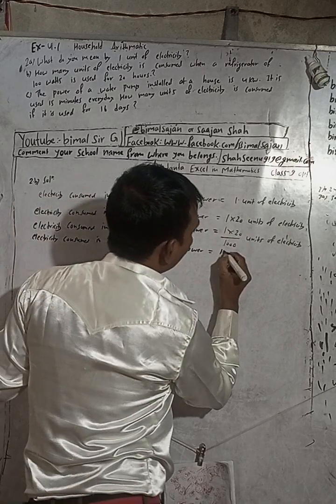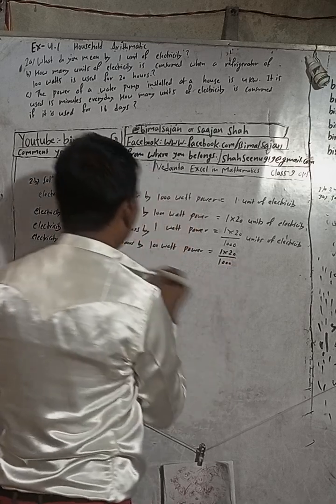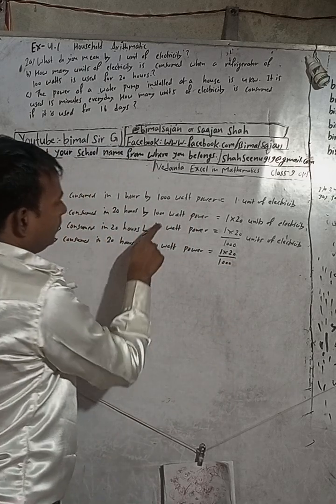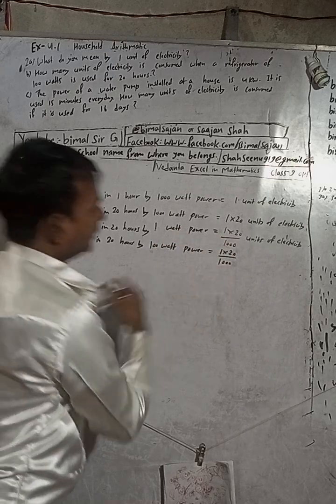1 into 20 divided by 1000. Now see, here 1 watt this much, so now...